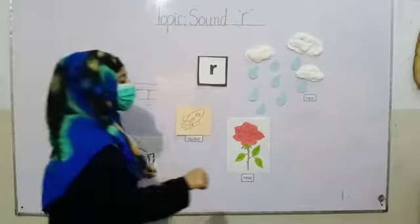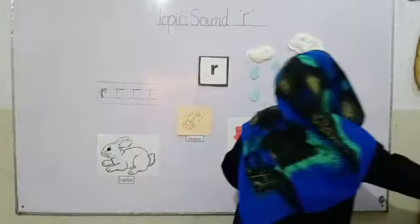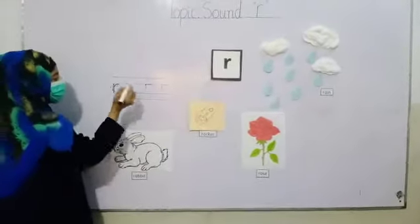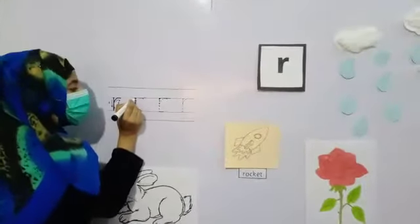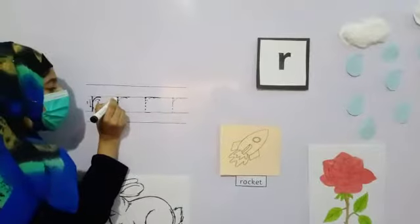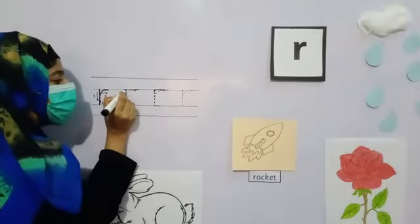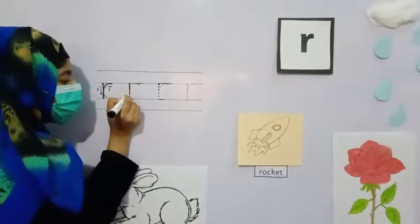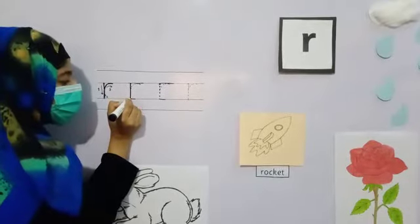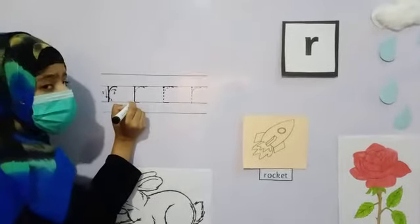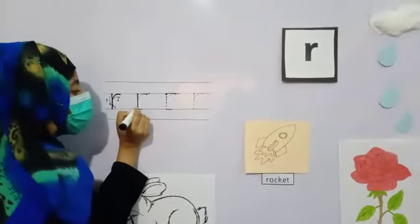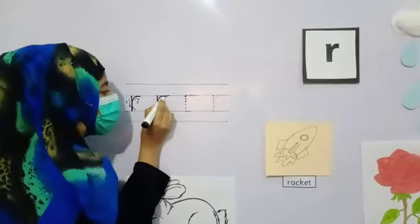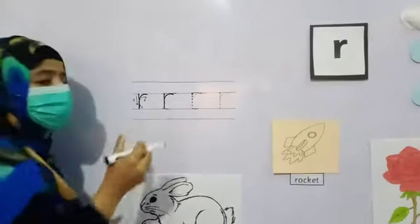Okay, let's start to trace it. How to trace? Look here. This is the starting point. Start from the point. Go down, down, down. Don't pick the pencil. Then go up. Go round. This is.